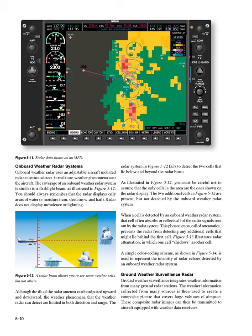A radar beam allows you to see some weather cells, but not others. Although the tilt of the radar antenna can be adjusted upward and downward, the weather phenomena that the radar can detect are limited in both direction and range. The radar system in Figure 5-12 fails to detect the two cells that lie below and beyond the radar beam. You must be careful not to assume that the only cells in the area are the ones shown on the radar display. When a cell is detected by an onboard weather radar system, that cell often absorbs or reflects all of the radio signals sent out by the radar system. This phenomenon, called attenuation, prevents the radar from detecting any additional cells that might lie behind the first cell. Figure 5-13 illustrates radar attenuation, in which one cell shadows another cell.